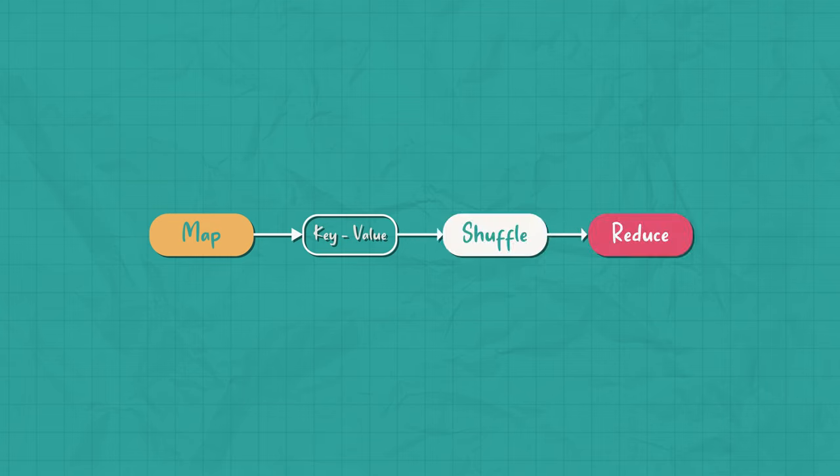There is this map function that transforms the data into key value pairs. The key value pairs are shuffled around and reorganized. They are then reduced to some final output. Before understanding it further through an example, there are a few things worth noting.